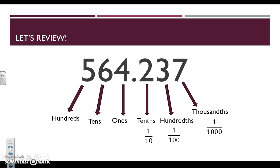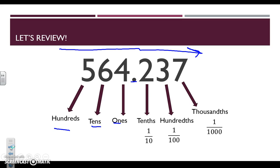Before we get started, it's important that we review our place value. We know that as we move from left to right, the value of our digits gets smaller and smaller. We need to remember that on the left side of the decimal we have our bigger digits — our hundreds, our tens, our ones. When we move to the right side of the decimal, we have our tenths, our hundredths, and our thousandths.